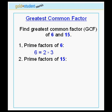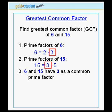Next, let's find the prime factors of the number 15. 15 is 3 times 5. 6 and 15 have 3 as a common prime factor.